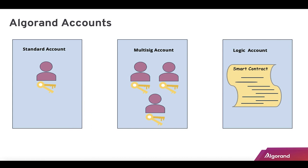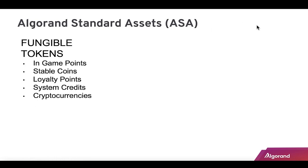There are three types of accounts. First is a standard account — that could be an individual. A multi-sig account is made up of more than one person — like a board of directors where you want a threshold of signatures, say five or more. You decide how big the group is, who's in it, and what your threshold is. Then there's a logic sig account, which is a smart contract — it returns true or false. If true, it writes the transaction to the blockchain; if false, it does not.